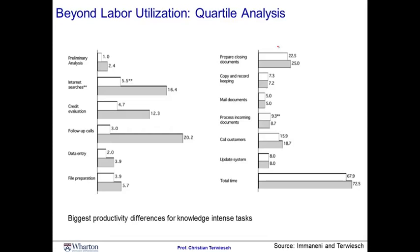I do this for two tasks that exist in a large bank in the underwriting operation for consumer loans. On the right of the slide, you see the closing step for this activity. For closing, there are a couple of rather clerical and manual tasks, and you observe a very tiny difference between the top quartile and the bottom quartile performer. On the left, you look at the underwriting function itself. For underwriters, the gap between the top performer and the bottom performer varies dramatically. It is interesting that in the more knowledge-intensive activities, the variation in productivity is more dramatic.